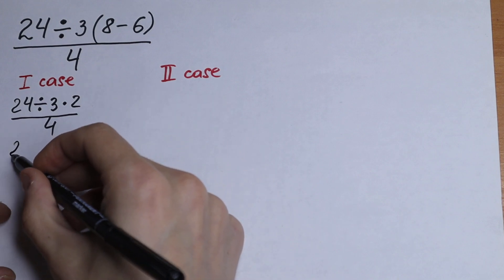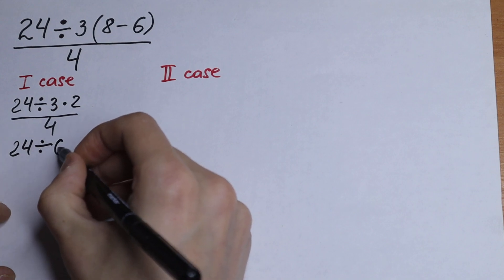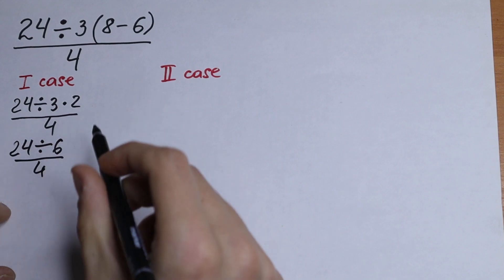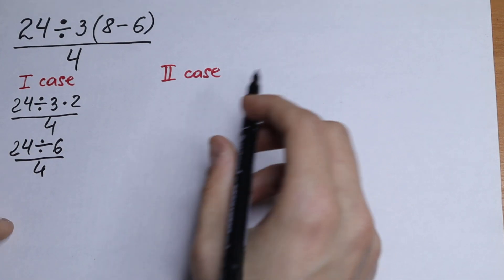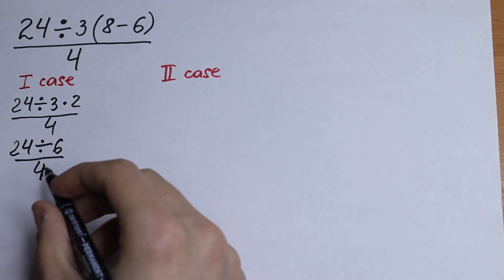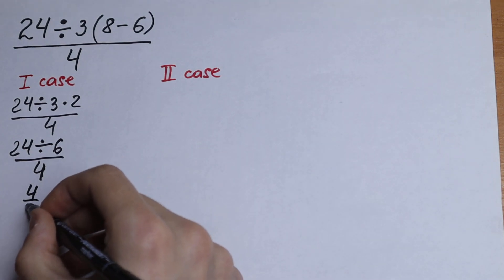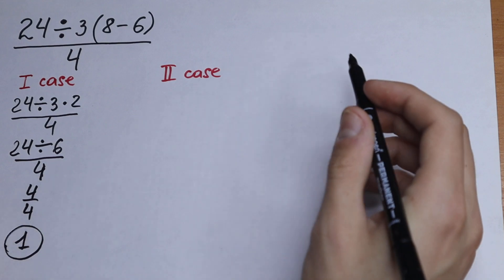So as a result we will have 24 divided by 6 over 4. And the final answer, 24 divided by 6 over 4, it will be equal to 1. 24 divided by 6 is 4, 4 over 4, it will be equal to 1. This is our first case.